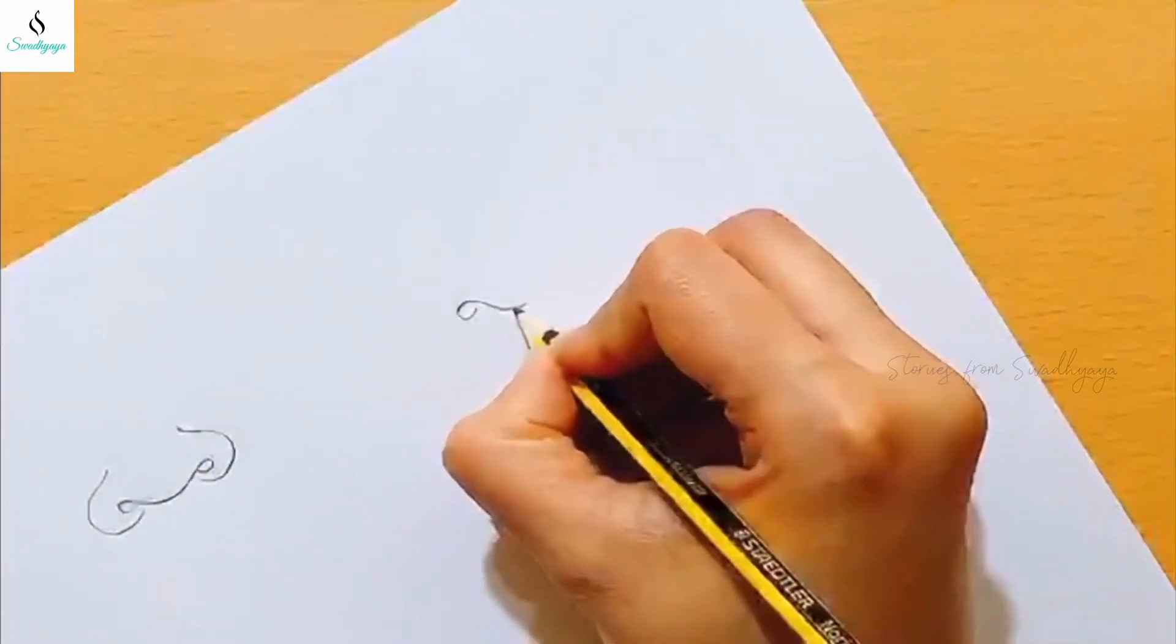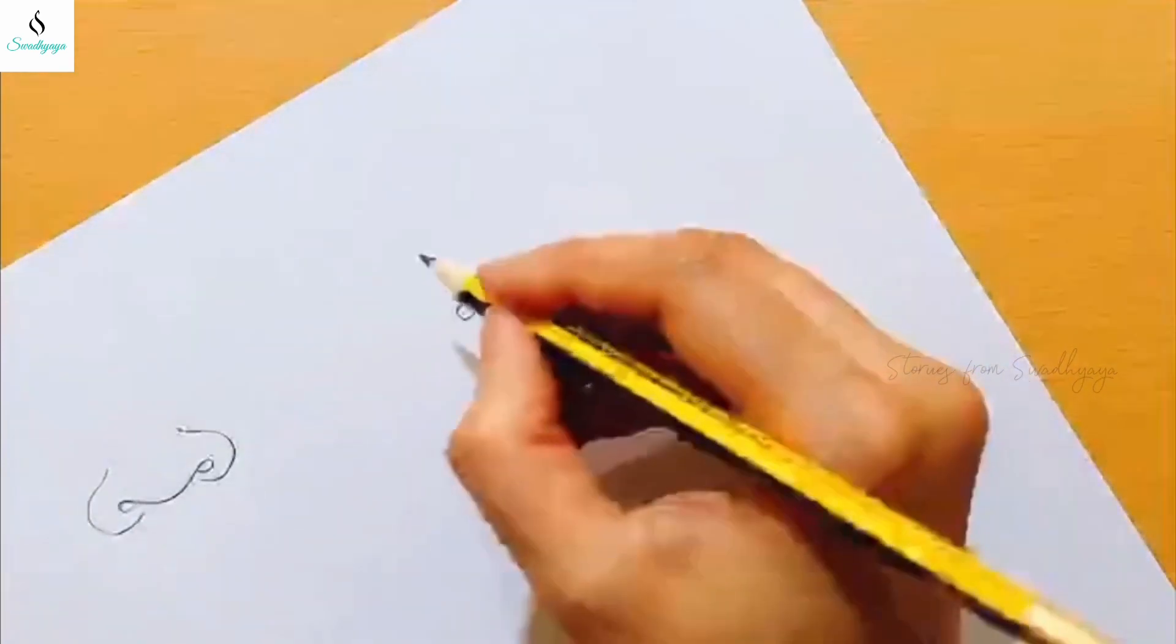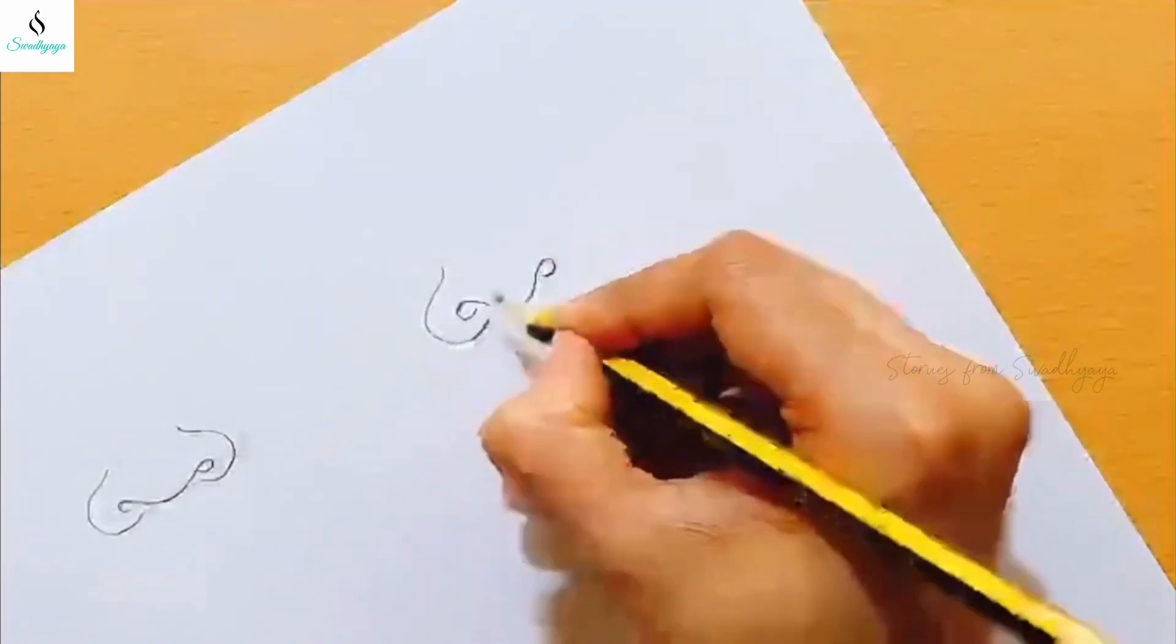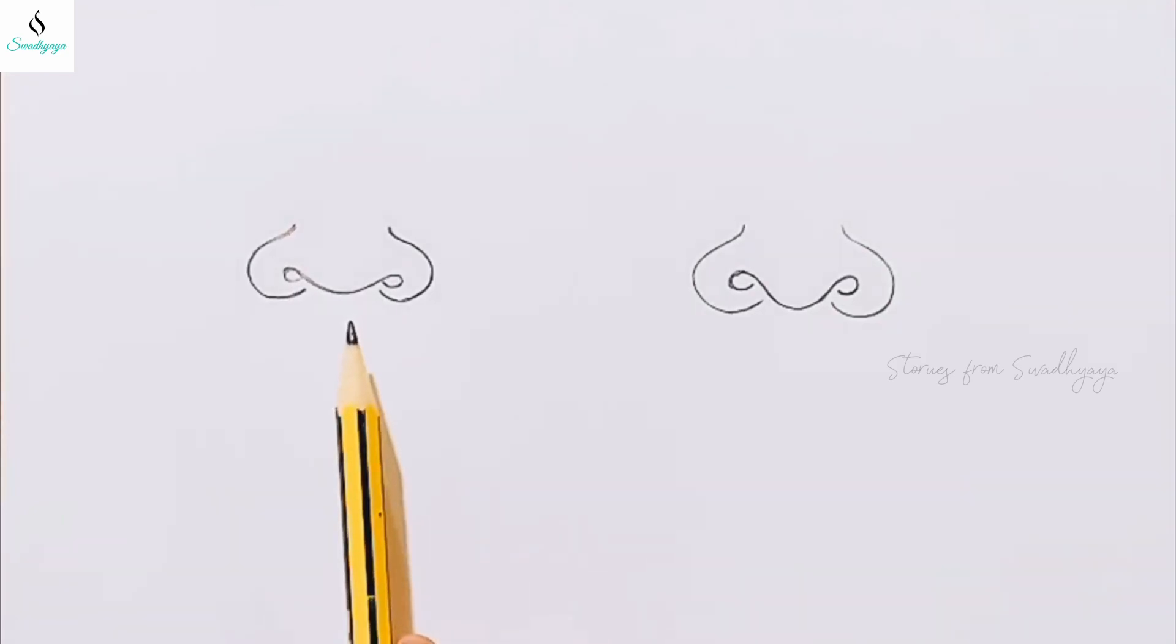The second one we have here is the raudram bhavam, which means anger. The difference is that in comparison to the first one, the nostrils will be wider open in this design. So for the anger expression we'll be drawing the nostrils wider.